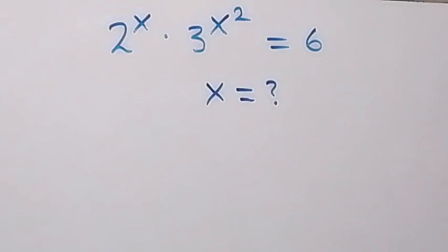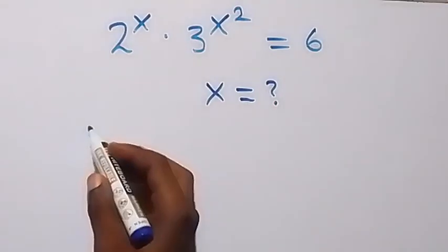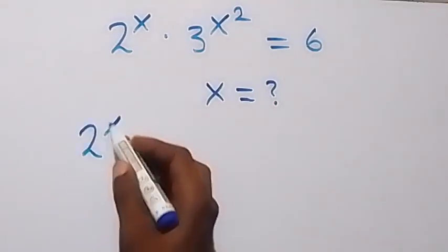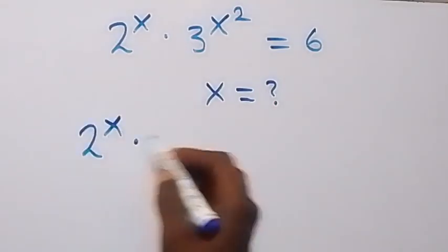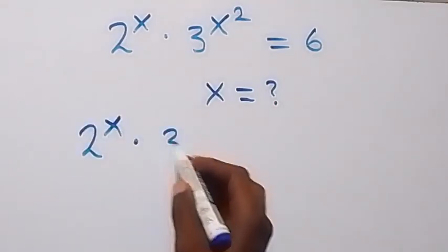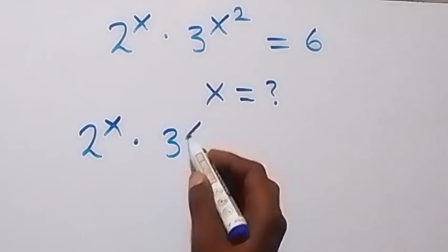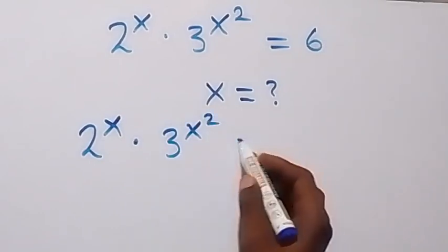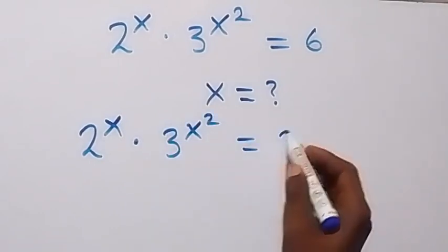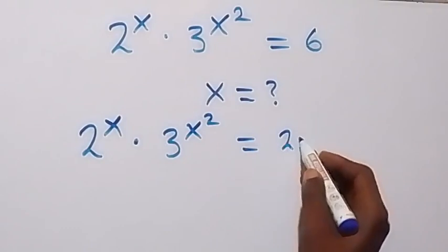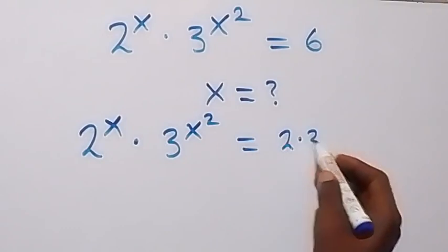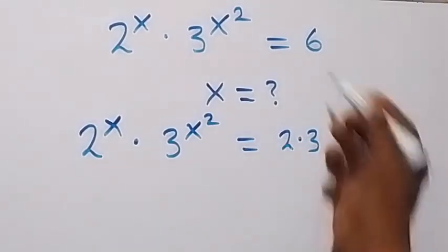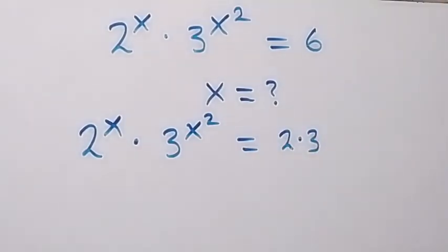From here, let's write this as 2 raised to power x times 3 raised to power x squared equals 2 times 3. We can write 6 as 2 times 3.